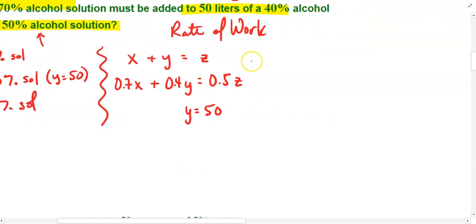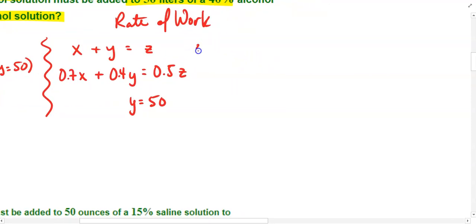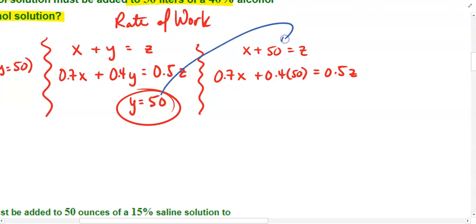We could rearrange it so that we could bring this to our calculator to solve, but I'm going to recommend that we make our substitution here by hand and see how far that gets us. We can note that x plus 50 equals z. We can state that 0.7 times x plus 0.4 times 50 is equal to 0.5z. And we have this expression because we've substituted 50 in place of each y.